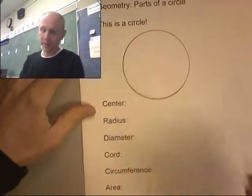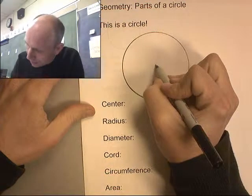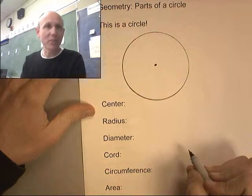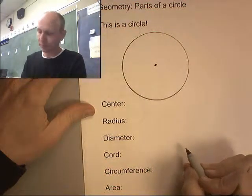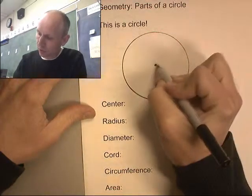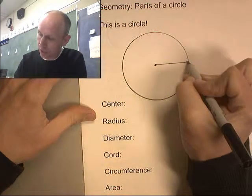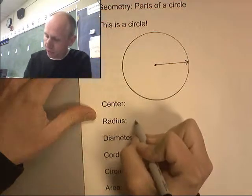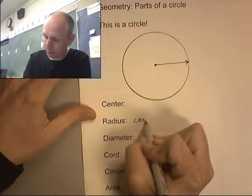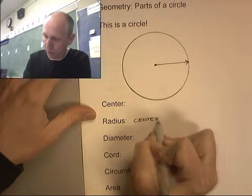Let's look at the parts of a circle. Right here, that is the center of a circle. The radius of a circle comes out from the center and goes to the edge. So radius is center to edge.